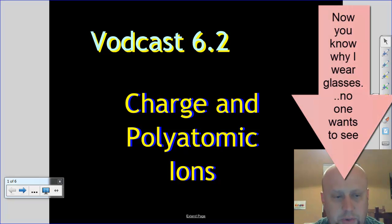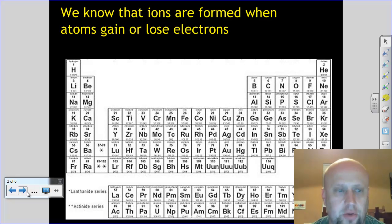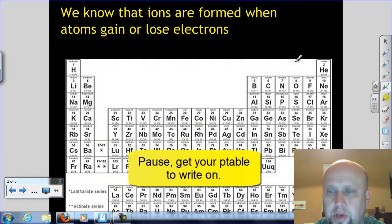Alright guys, let's jump into VODCAST 6.2. We're going to talk a little bit about charge and about the dreaded polyatomic ions. So we already know what ions are. Ions are formed when we gain or lose electrons. But a lot of stuff about ions can be determined just from looking at the periodic table.